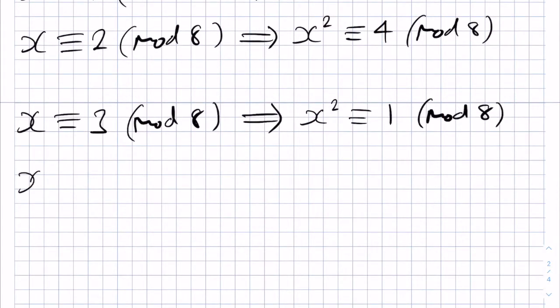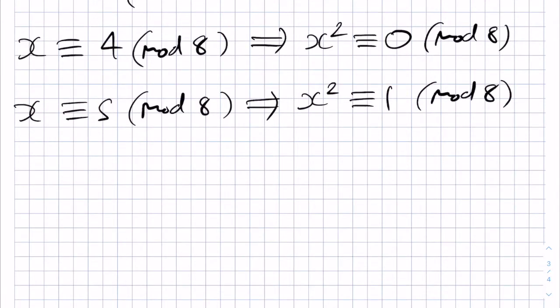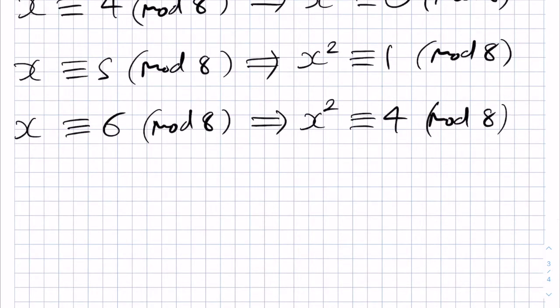Next, we have the case of 4. This will give us 16, but of course this is just 0 in modulo 8. Next, we have 5 and this gives 25 after squaring, which is just 1 because we have 24 plus 1 and 24 is a multiple of 8. Next, we have x being congruent to 6, this gives us 36, but of course that's just 4 after removing the 32. And then the very last case, finally, is x being congruent to 7. This gives us 49, but that's just 1 in modulo 8.